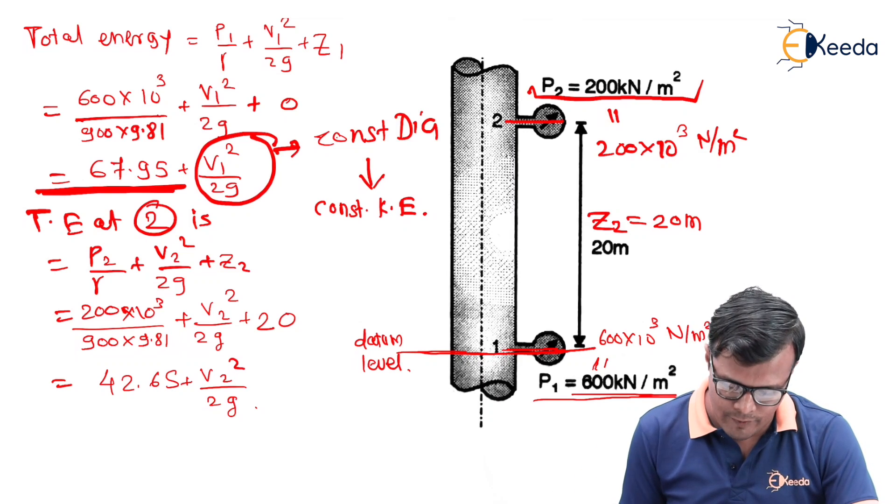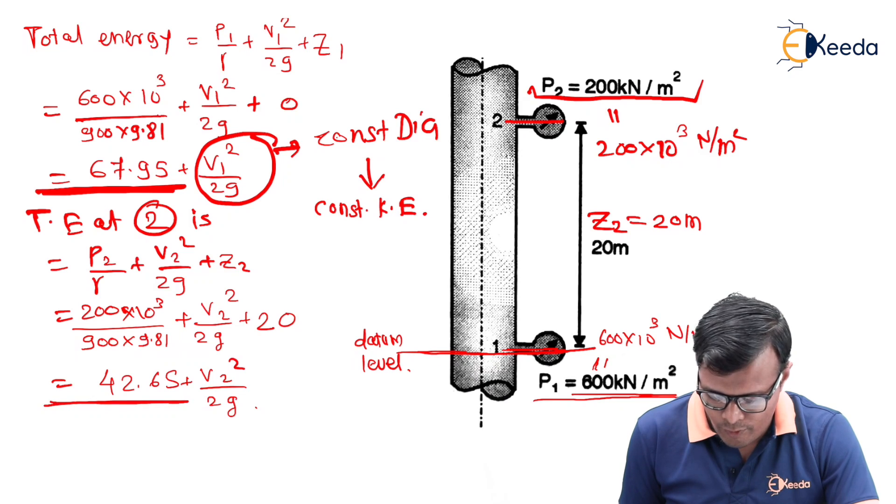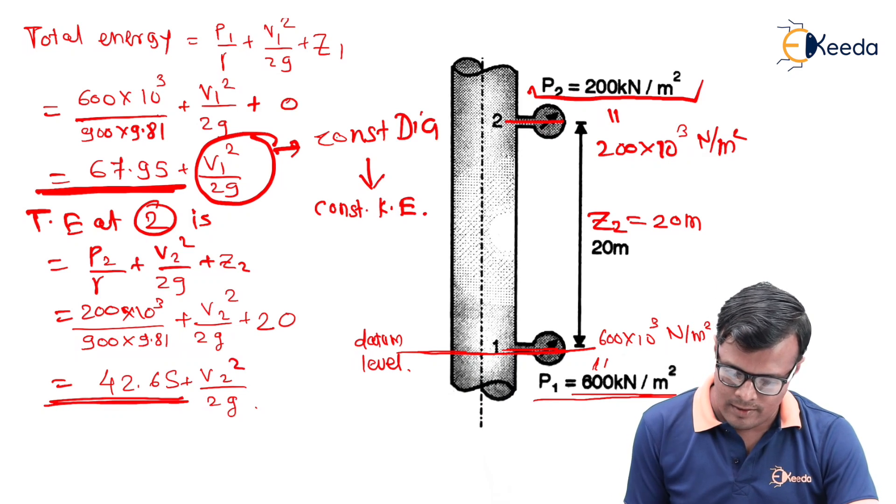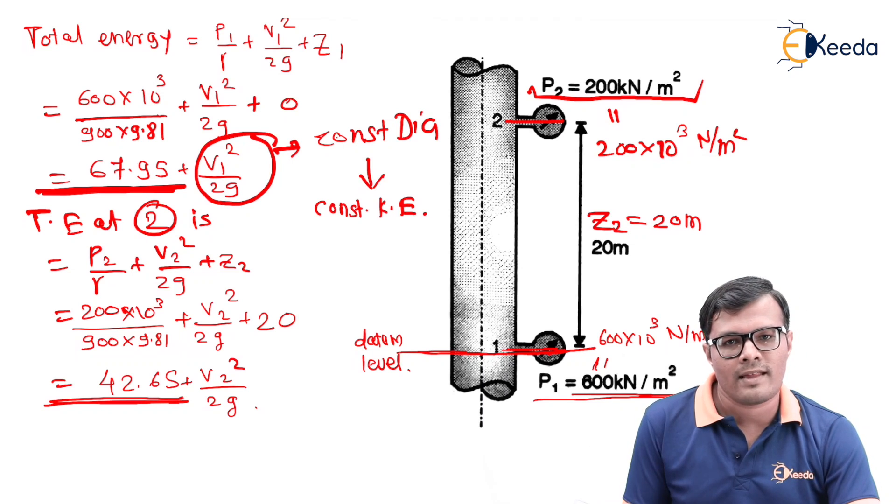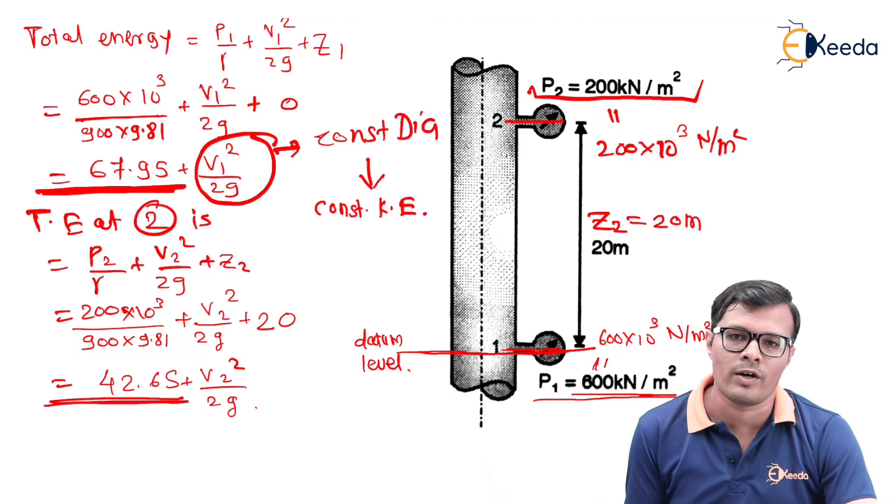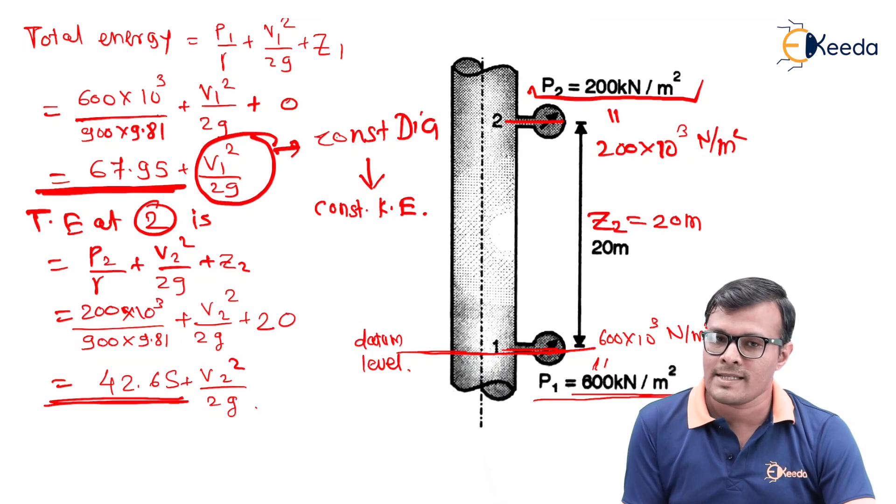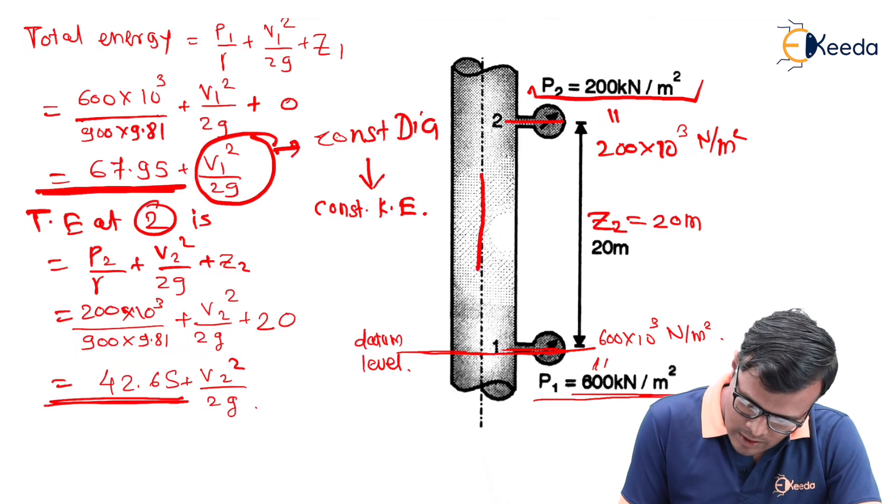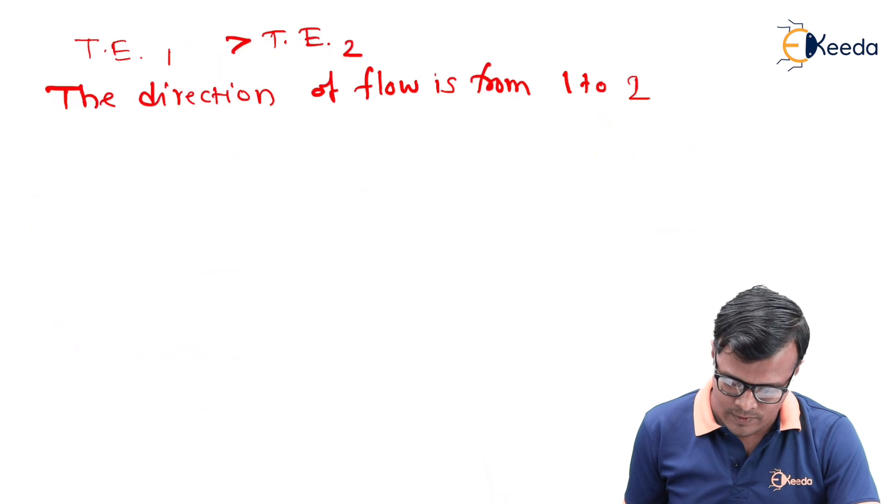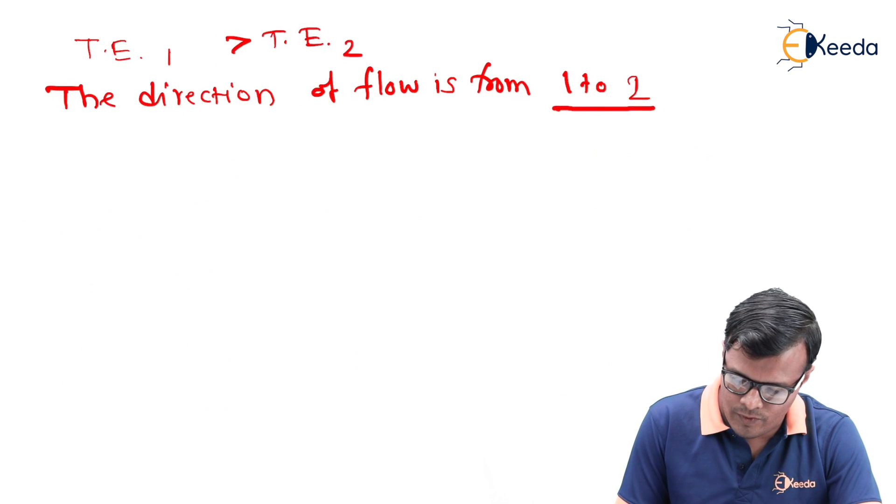Here the comparison of energy will be between these values, 67.95 and 42.65, out of which energy is more at one point and less at the second point. It means there exists the loss of energy from one point to another point. The flow is actually in the direction as shown in the figure - the direction of flow is from 1 to 2.